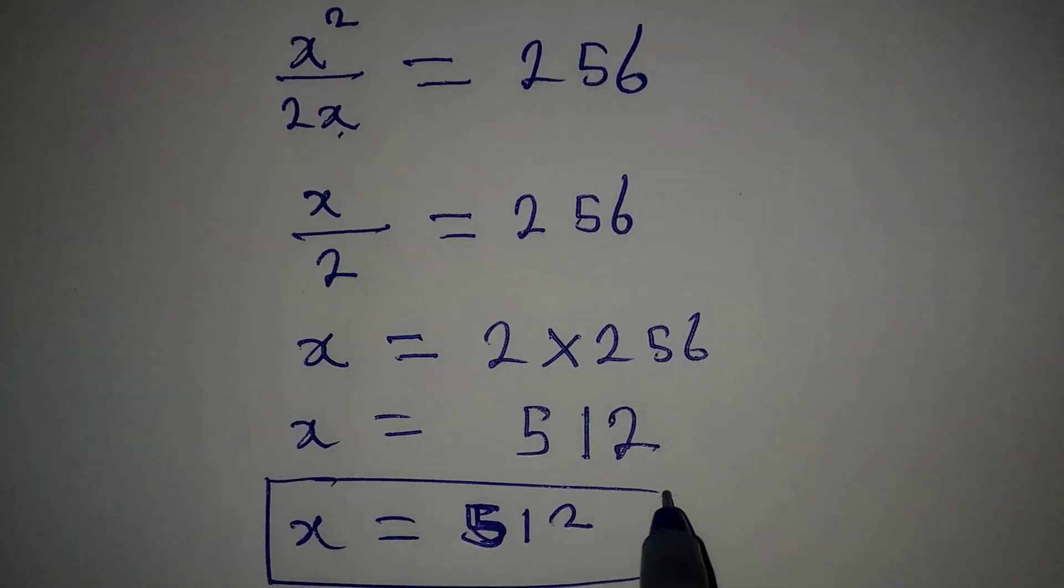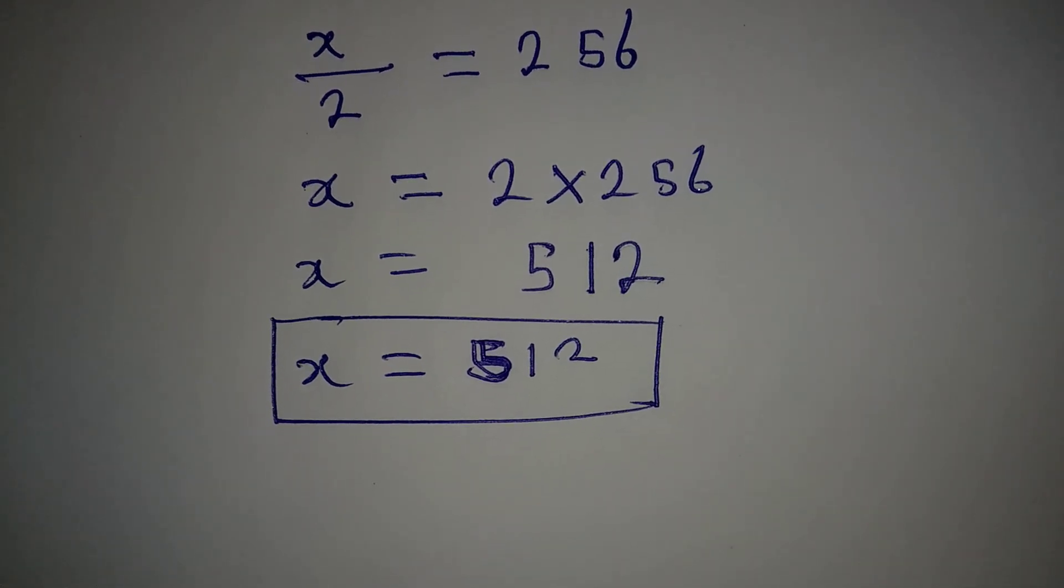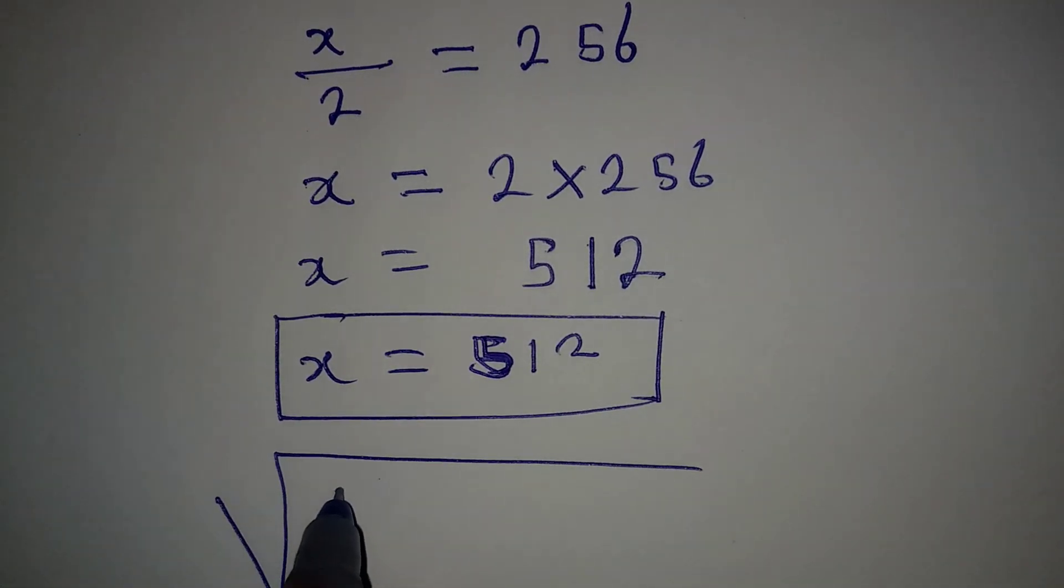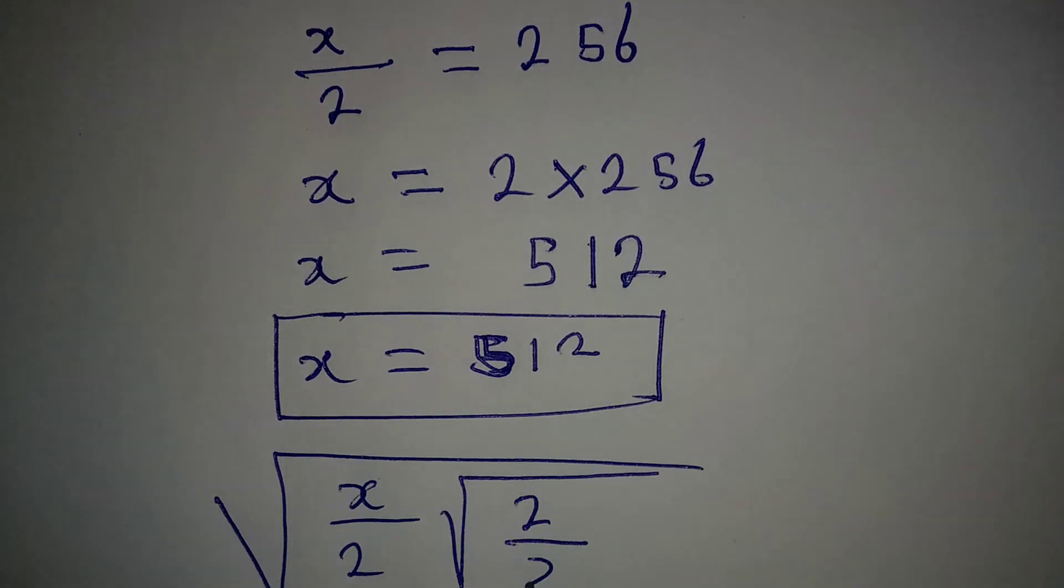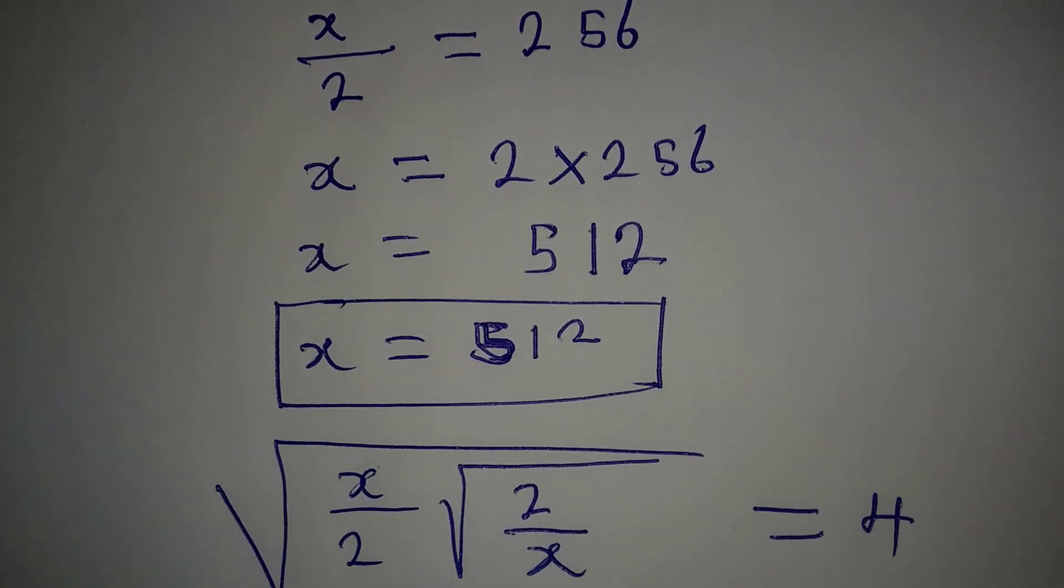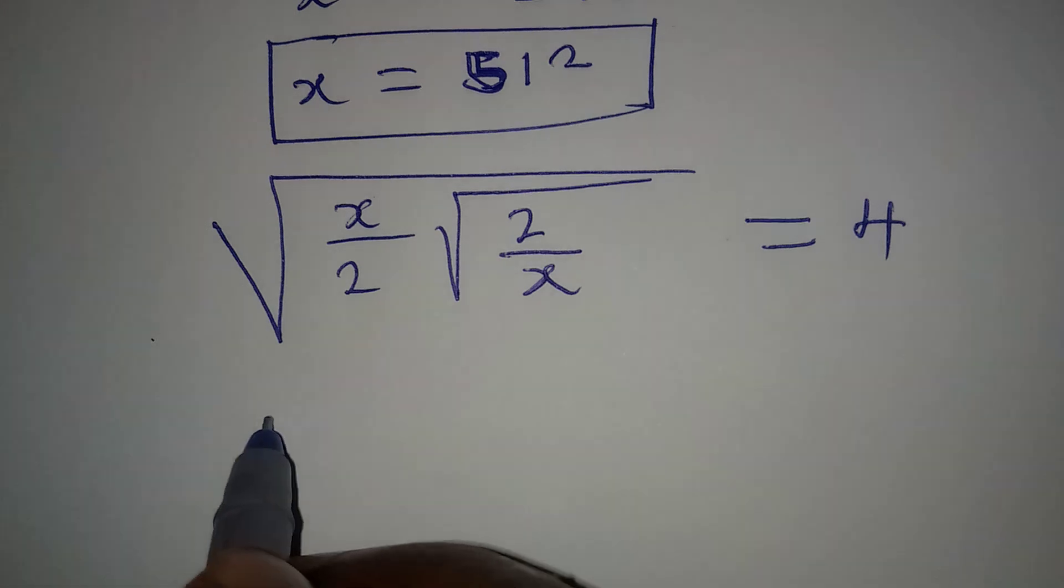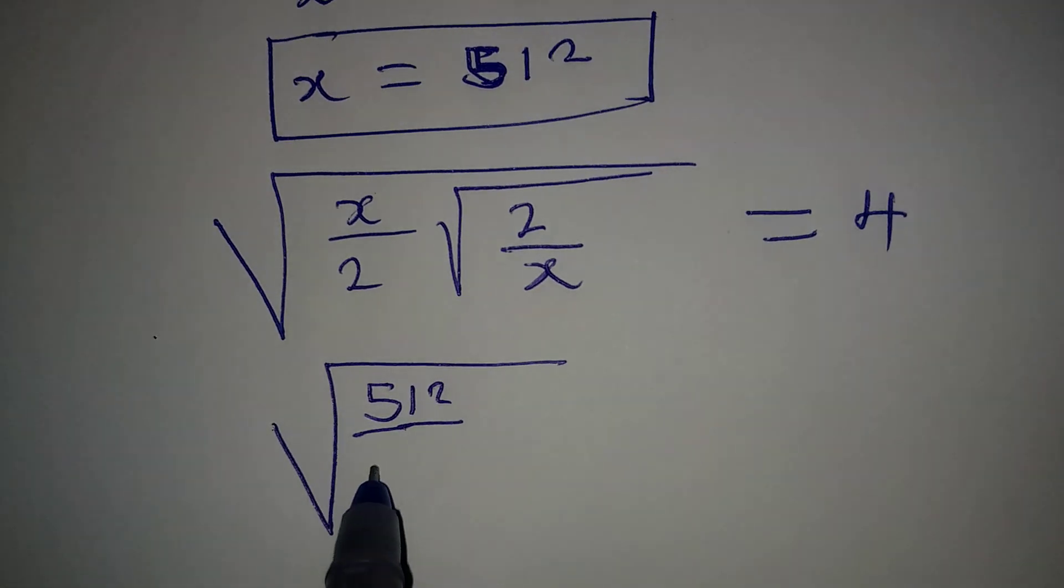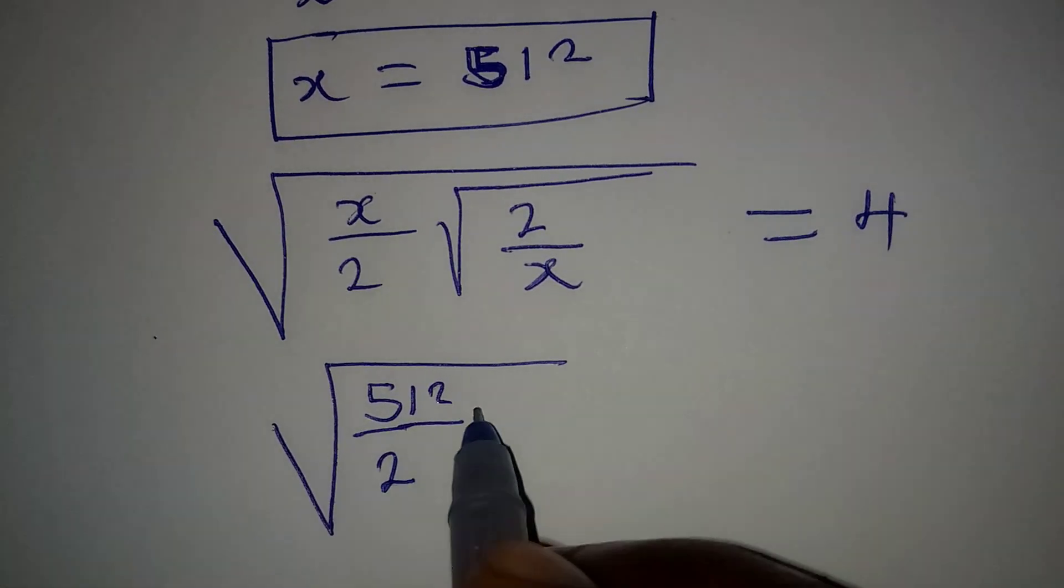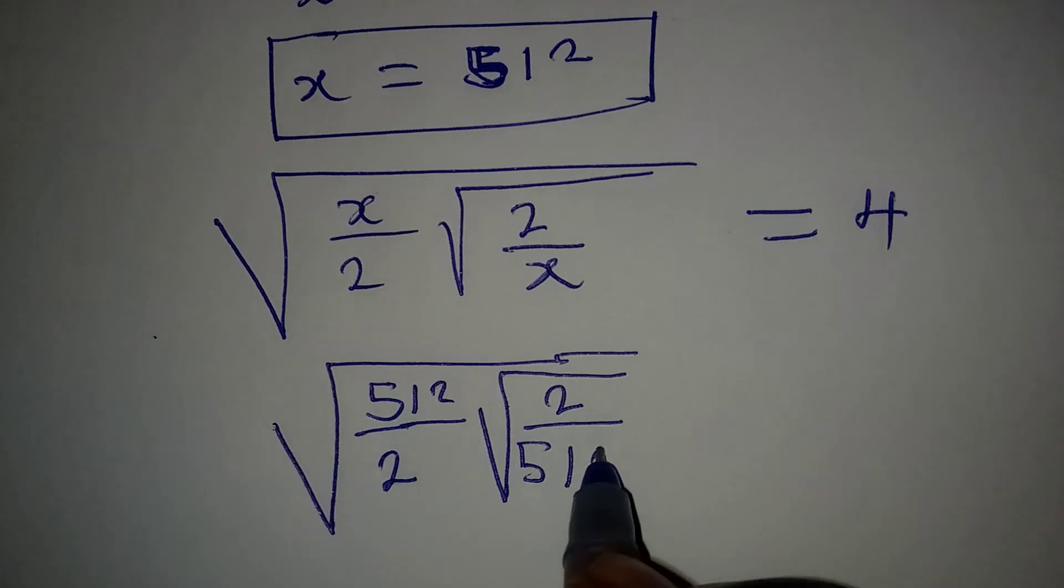Okay, but we'll check the answer now because this may not satisfy the equation, right? The original equation is square root of x over 2 multiplied by square root of 2 over x being equal to 4. This is the original equation. And now putting the value of x which is 512, we're going to be having square root of 512 divided by 2, then multiply by square root of 2 over 512.